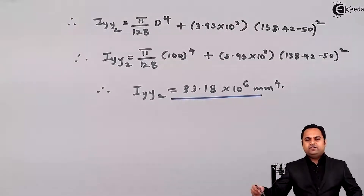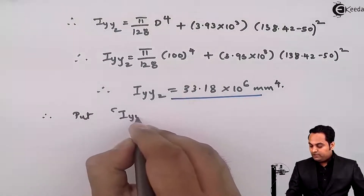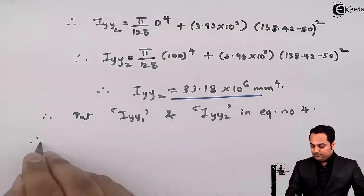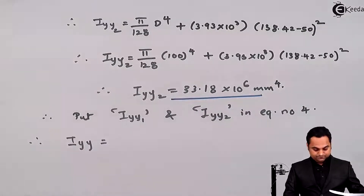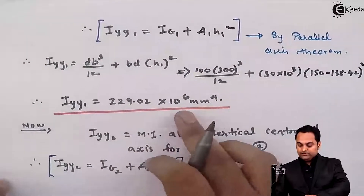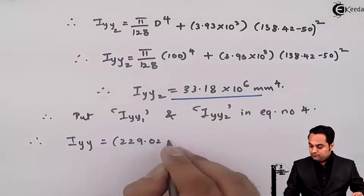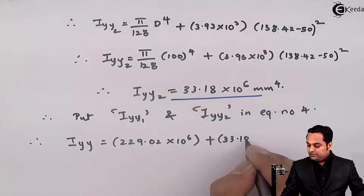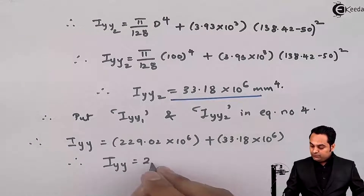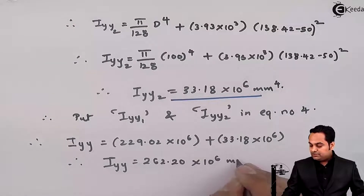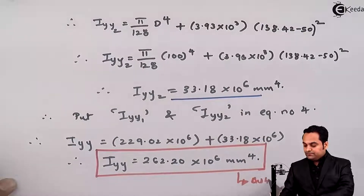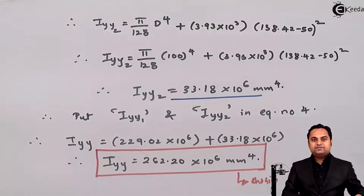Substituting into equation four: Iyy = Iyy1 + Iyy2 = 229.02×10⁶ + 33.18×10⁶ = 262.20 × 10⁶ mm⁴. This is the moment of inertia about the y-axis for the complete composite section.